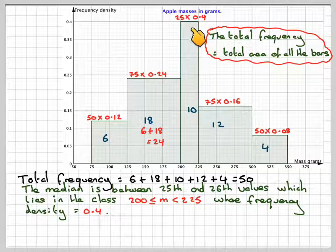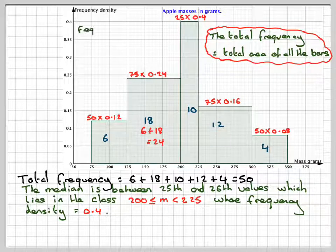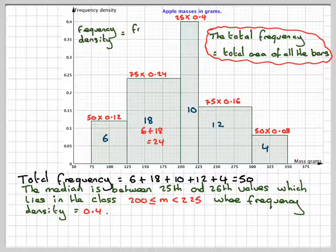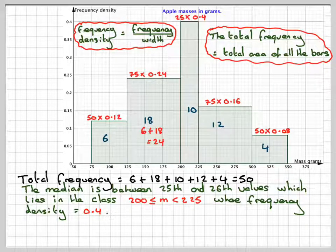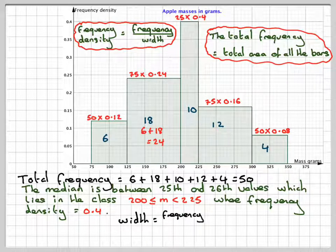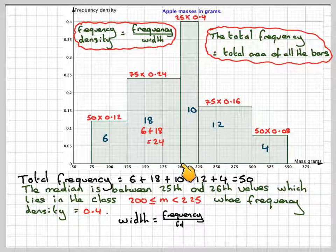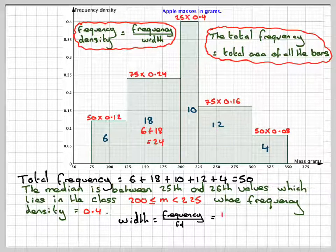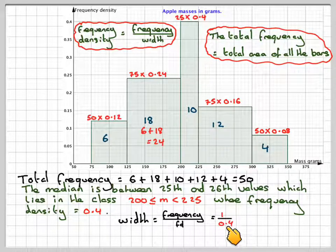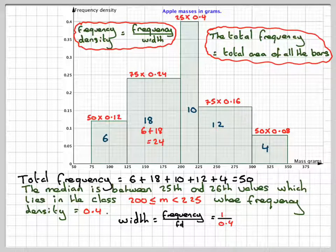The frequency density of this class is 0.4, and we know that frequency density is equal to the frequency divided by the width. So working backwards, the width that we're going to require to represent 1, because we need 1 more in here, is going to be the frequency divided by the frequency density. We just want 1 more in order to get our 25th value, so it's going to be 1 divided by 0.4, which is 2.5.